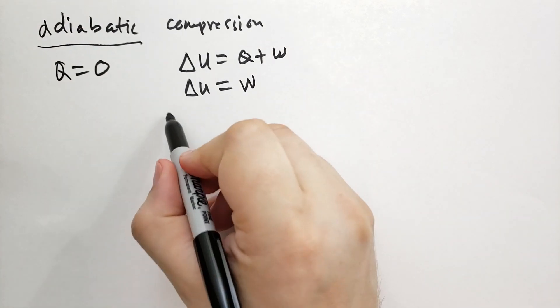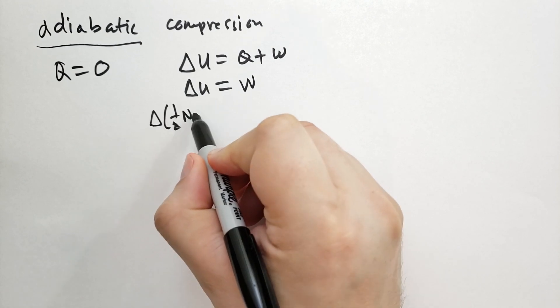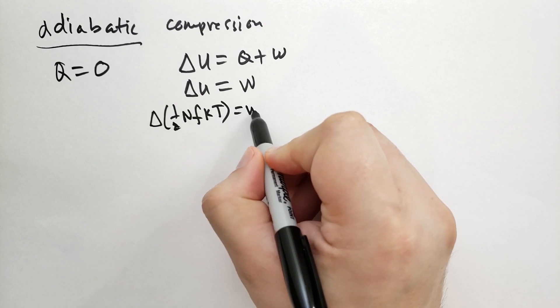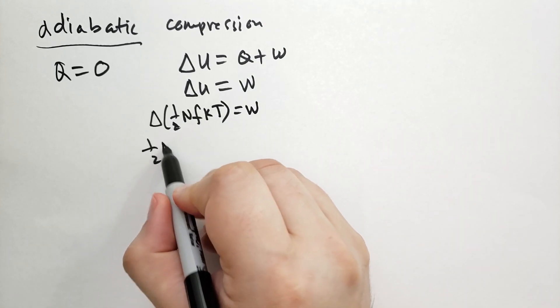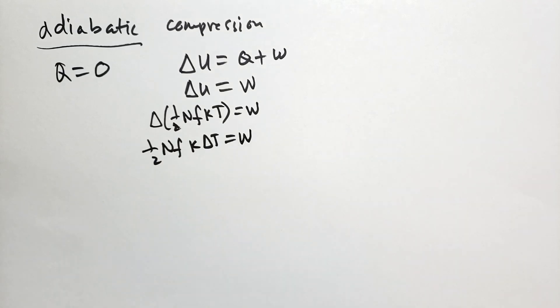Well, the internal energy of the system is one half. So it's the change in the one half of the number of particles times the degrees of freedom times Boltzmann's constant times the temperature, and that has to equal the work. And so the only thing that's going to change is the temperature. So we have one half N f K delta T is equal to the work done on the system.